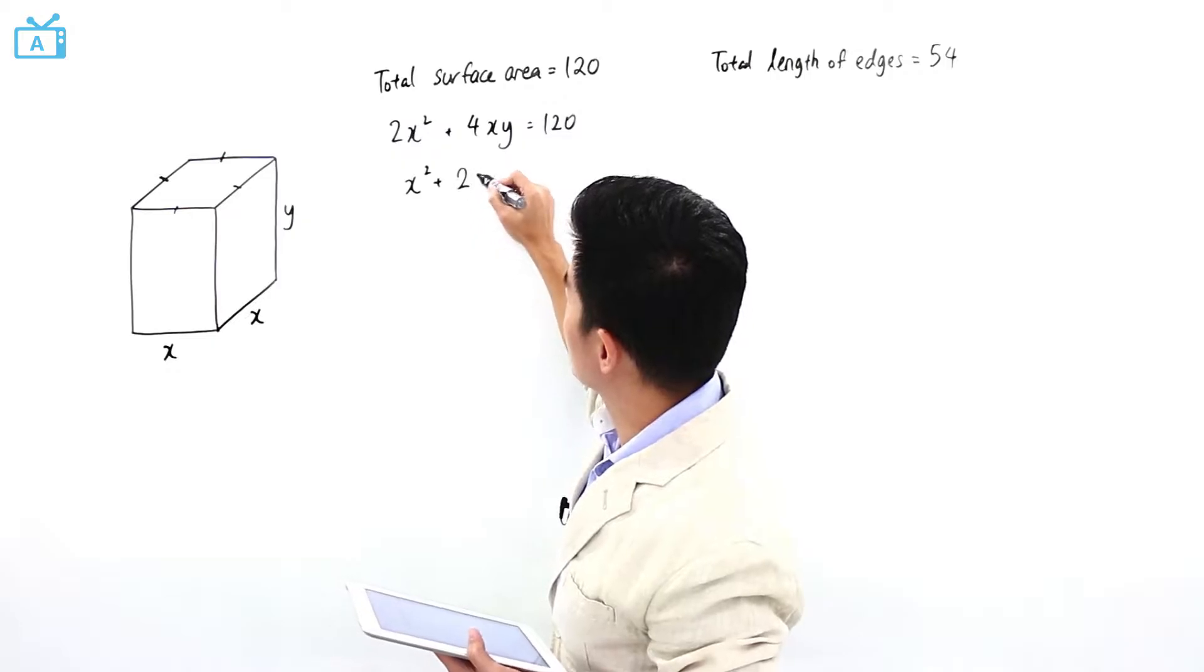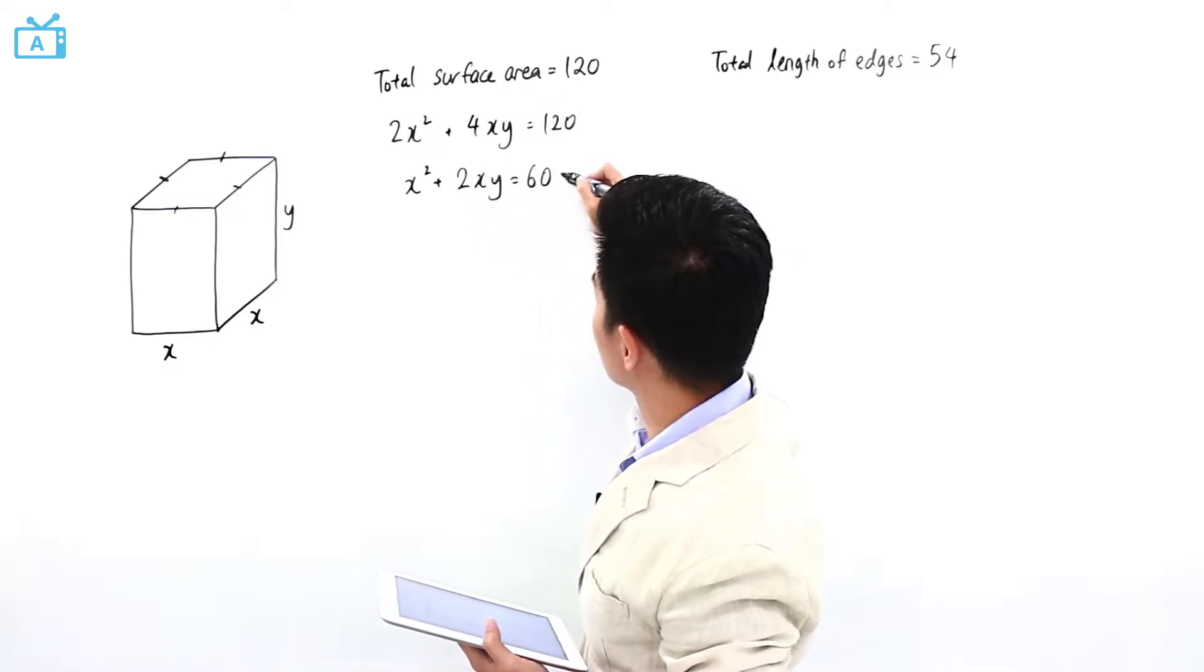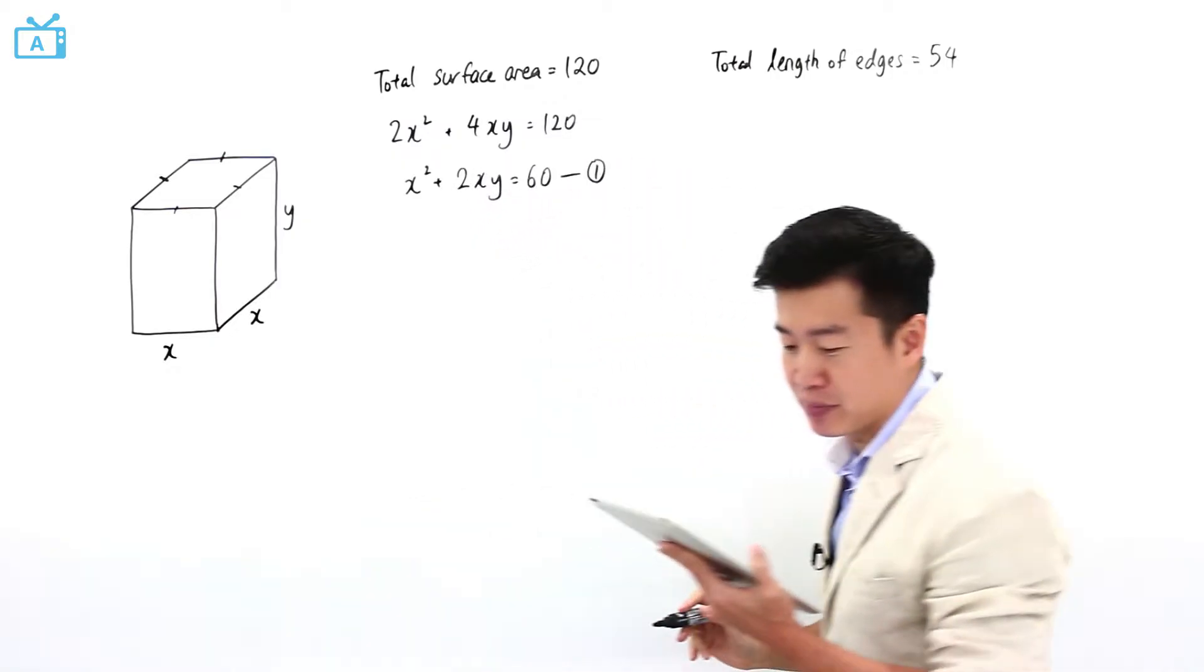Simplifying this: x squared plus 2xy equals 60. I'm going to call this equation number 1.